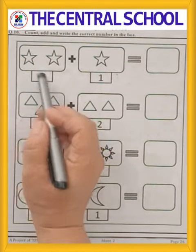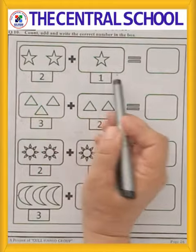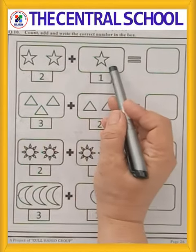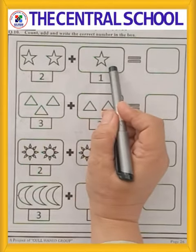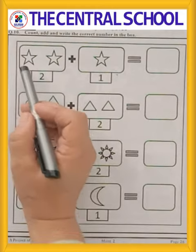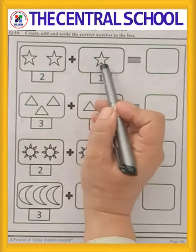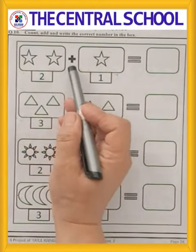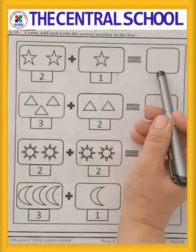Here is number 2 and here are 2 stars. Here is number 1 and here is 1 star. Let's count all together these stars. 1, 2, 3. So this means 2 plus 1 is equal to 3.